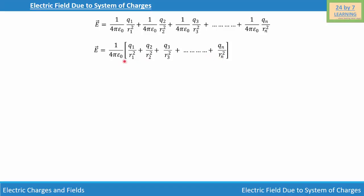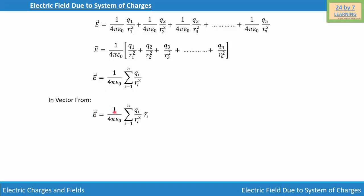Using the sigma function to find the sum of all these electric fields, we write E = 1/(4πε₀) × Σ(i=1 to n) Qi/Ri². In vector form, the net electric field at point P is written as vector E = 1/(4πε₀) × Σ(i=1 to n) Qi/Ri² × R̂i. This is known as the principle of superposition for the electric field, and this is how we find the electric field due to a system of charges.